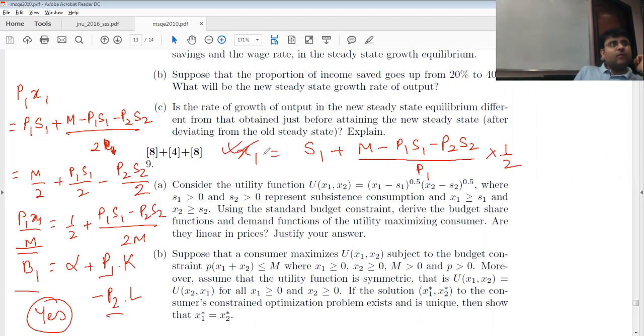Okay, what about the demand function? This is the demand function. The demand function is basically s1 plus m by 2p1 minus s1 by 2 minus p2 by 2p1 into s2. Can I write it in this way?